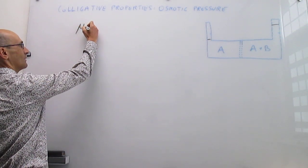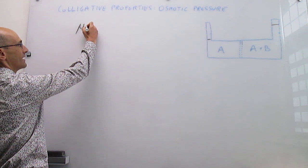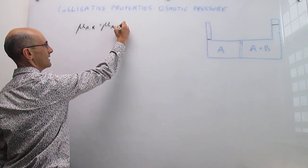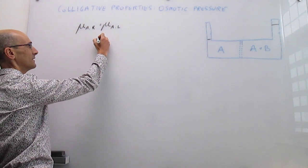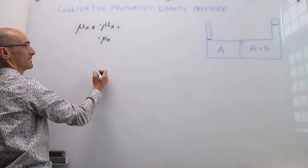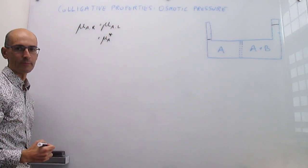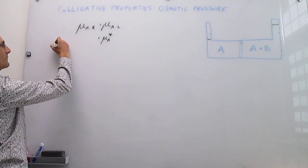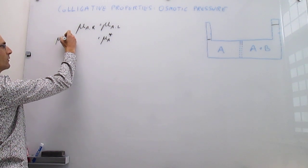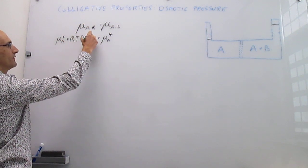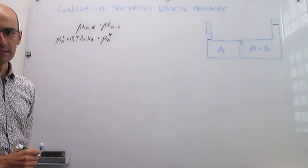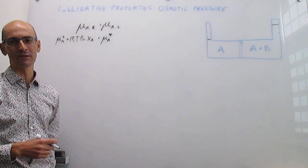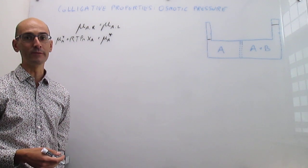At equilibrium, the chemical potential of A in the right compartment has to equal the chemical potential of solvent A in the left compartment. In the left compartment we only have pure substance, so that is the chemical potential when pure. In the right compartment we have A with a little bit of B, so the chemical potential is the chemical potential of A when pure plus RT times the natural log of the mole fraction of A under ideal conditions. Notice how osmotic pressure is another application of chemical potentials of liquids in solutions, illustrating how powerful that concept is.